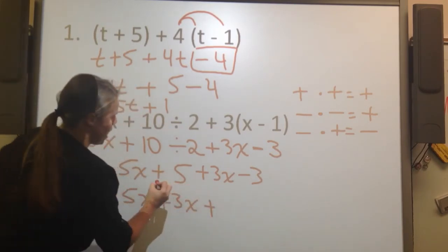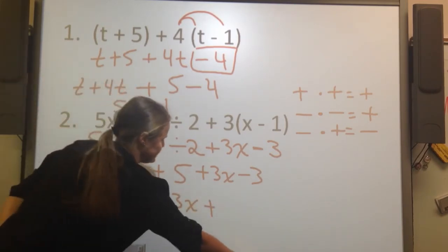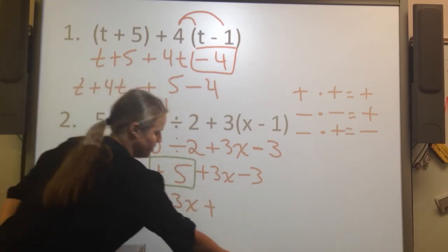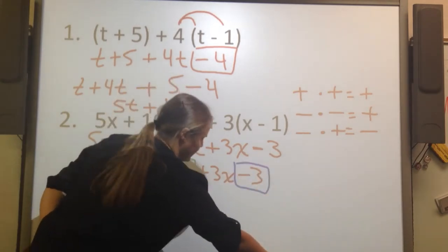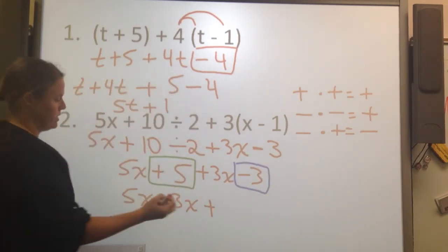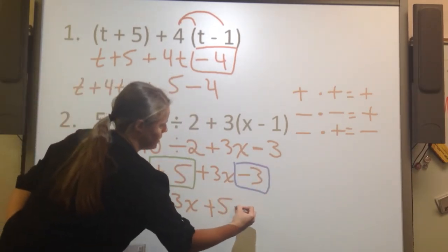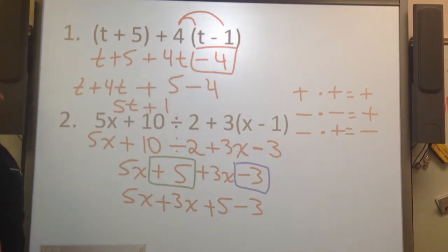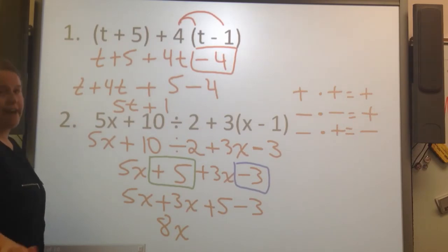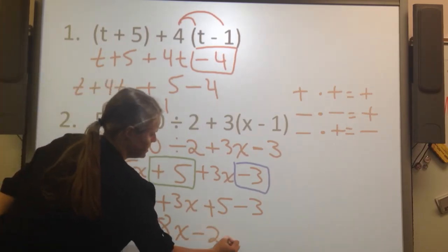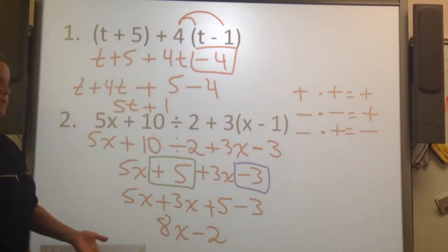And again, your operation stays with the problem, so like my plus 5 and my minus 3, very important there. So plus 5 minus 3. And now 5 plus 3 is 8x, and then 5 minus 3 is 2. And for right now, we're done.